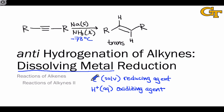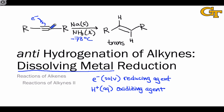Anything that wants to be reduced will accept this solvated electron, and that includes alkynes. In this dissolving metal reduction, the key step really is the addition of this electron — it's like a single electron, like a radical dot — to the alkyne. We'll see how this works and why this leads to trans alkenes in the remainder of this video.